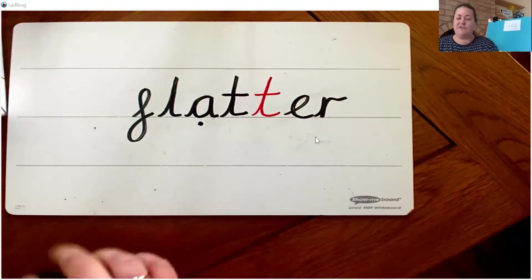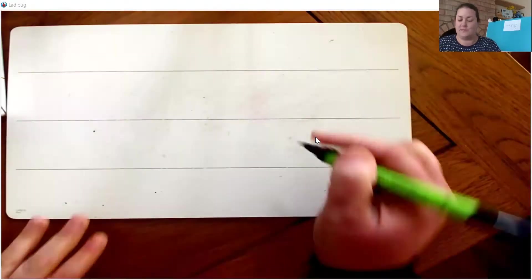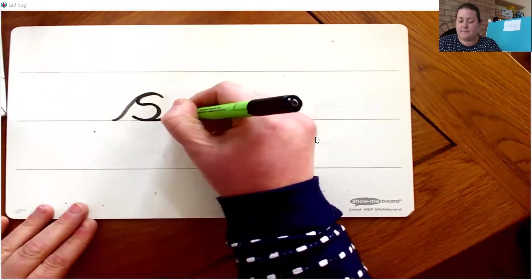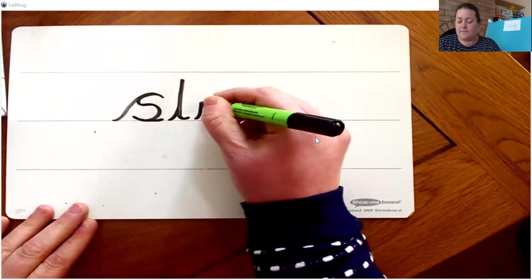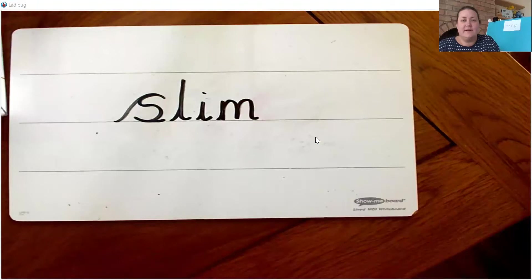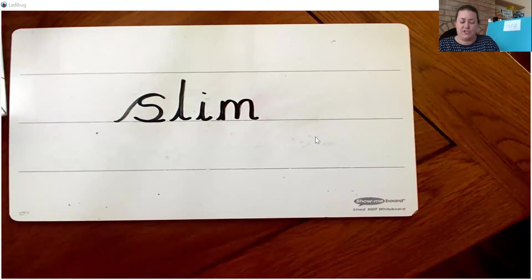Your turn to have a go. I would like you to have a go at this word for me. So what does that say? It says slim. S-L-I-M. But I would like you to change the word slim into the word slimmer. So pause the video whilst you go and have a go at doing that. Slim, change it into slimmer. Off you go.